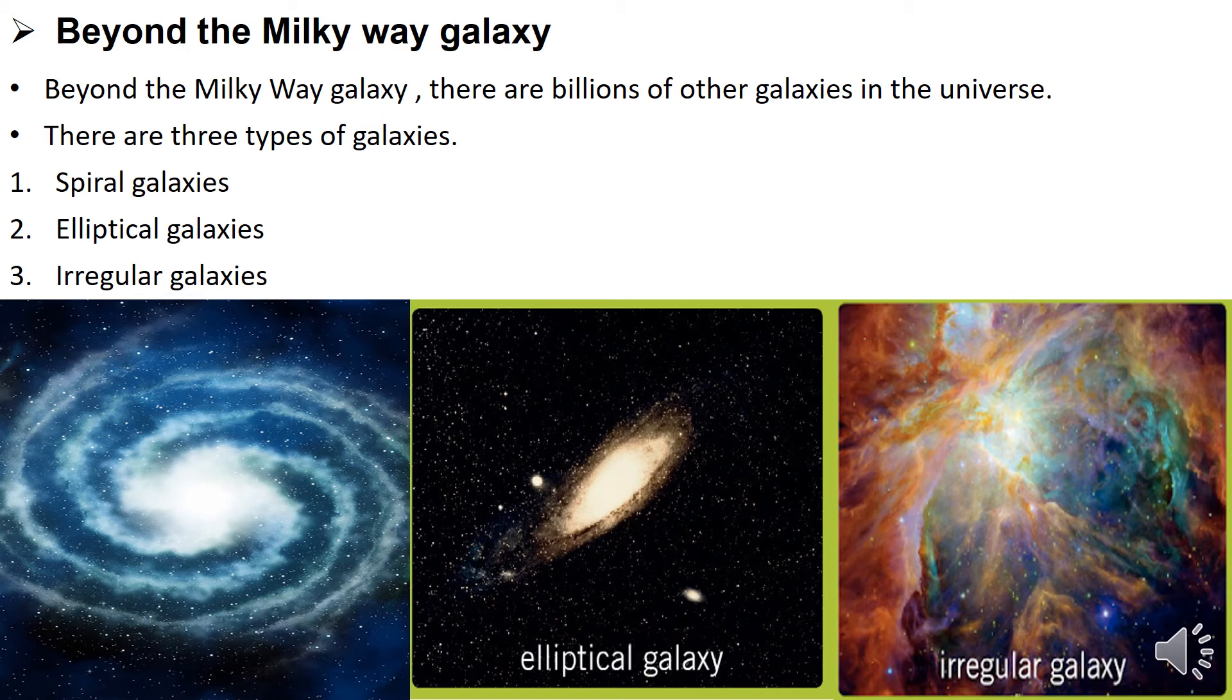Then, they find out the groups are separate galaxies and they estimate that there are billions of them in the universe and that each one may have over a billion stars. That means, beyond the Milky Way galaxy, there are billions of other galaxies in the universe. And, there are three, mainly, three types of galaxies.